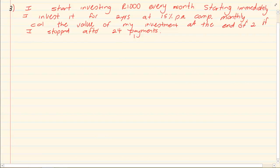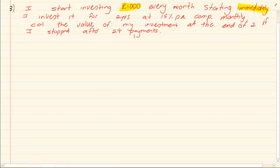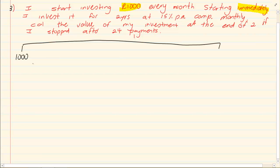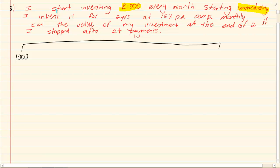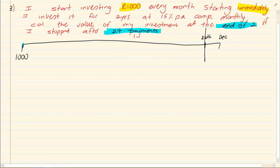This is the third style and by far the most challenging. Now they say that you're investing a thousand rand and also that you are investing it immediately, which means on your timeline you're starting right now. From previous knowledge you know that if you're starting right now it's usually plus one. But look at what they're telling you: you're investing for two years at fifteen percent per annum compounded monthly. Calculate the value at the end of two years if you only made twenty-four payments. Now if I started immediately then by the twenty-fourth payment I'm at end of November — not the end of December. So your last payment is here but till the end of two years you still have extra time.